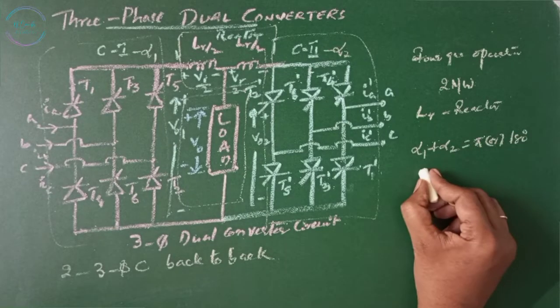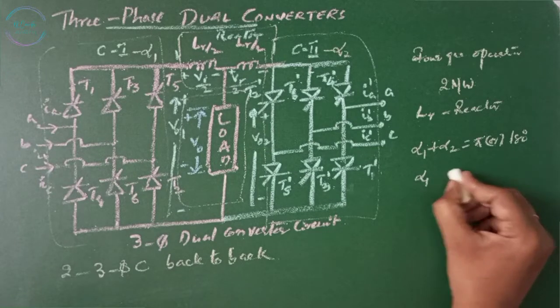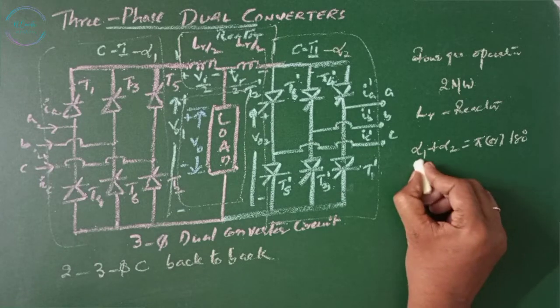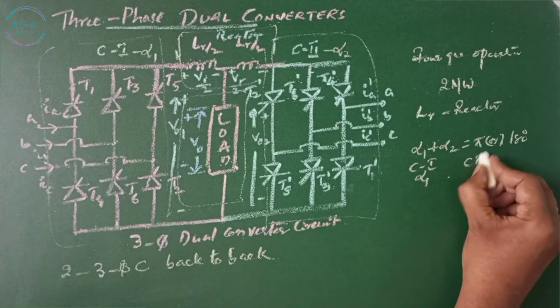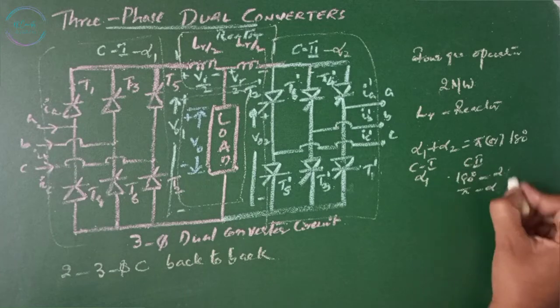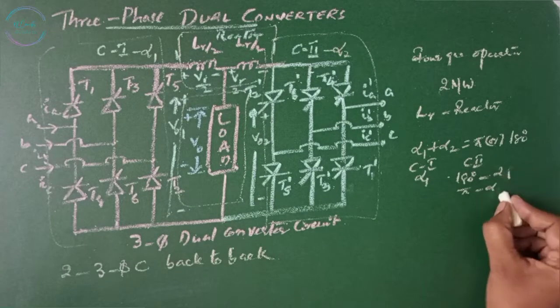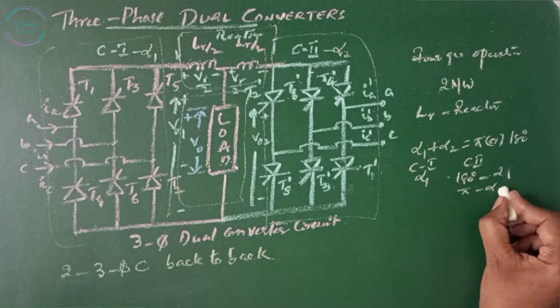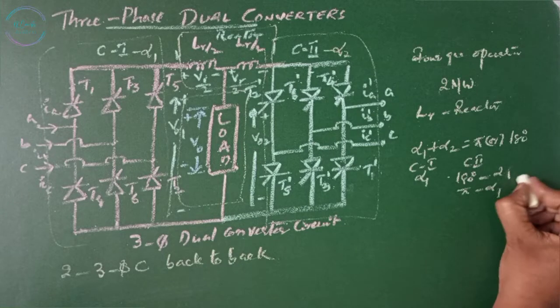So if we operate converter 1 with alpha 1, then we need to operate converter 2 with pi minus alpha 1, which equals alpha 2.